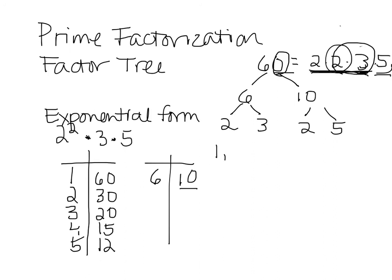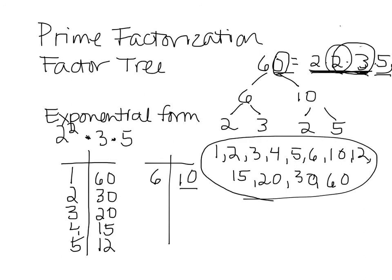In order, they are 1, 2, 3, 4, 5, 6, 10, 12, 15, 20, 30, and 60. So that's how you use, that's first of all how you do a factor tree. And it's also how you use it to find all of the factors of a number.